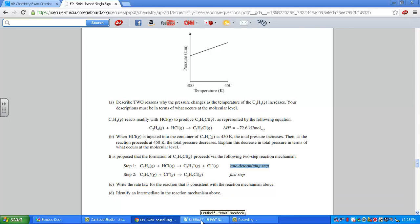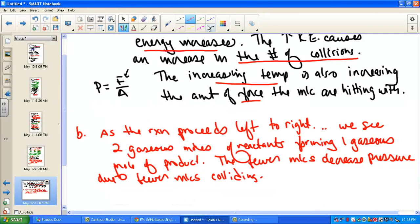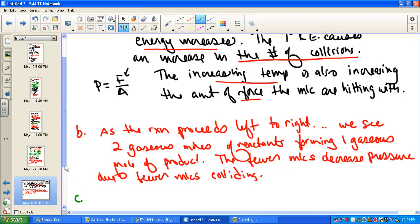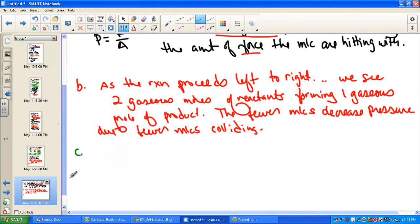Well, the rate law comes from the slowest step. So to earn our credit for letter C, we simply have to show the rate law in the forward direction of the rate determining step. We write that by saying rate is equal to K times the concentration of C2H4, first order,